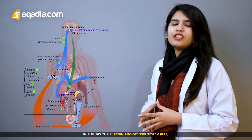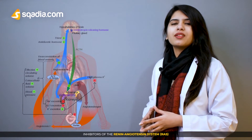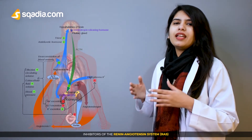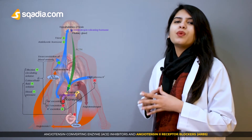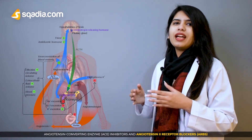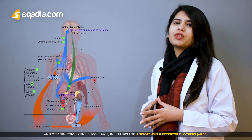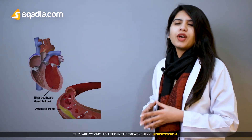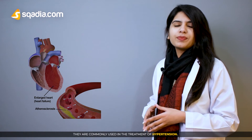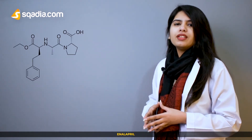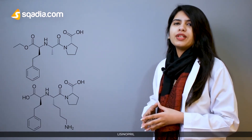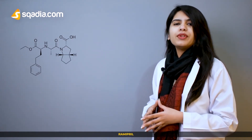Inhibitors of the Renin-Angiotensin System: Angiotensin Converting Enzyme inhibitors and Angiotensin 2 Receptor Blockers are commonly used in the treatment of hypertension. ACE inhibitors include enalapril, lisinopril, ramipril, and captopril.